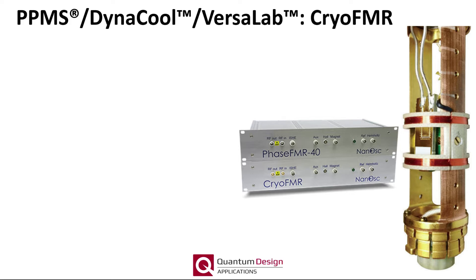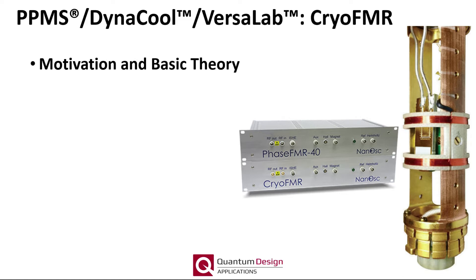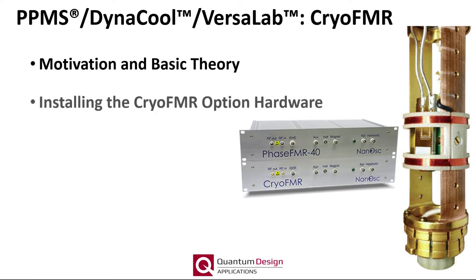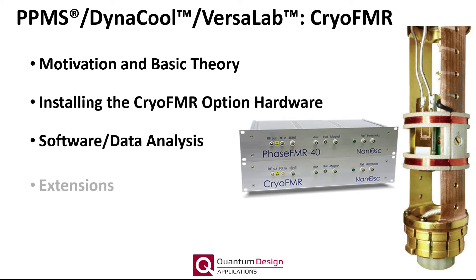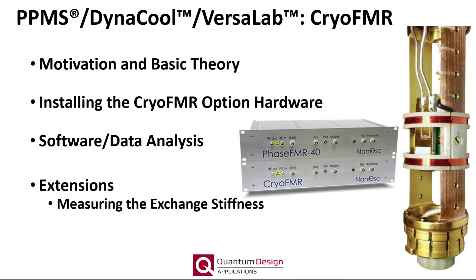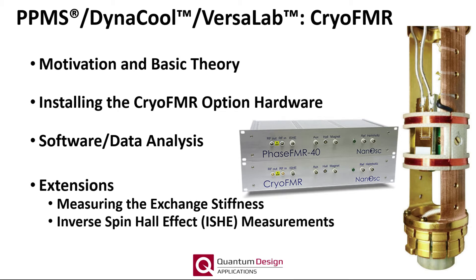The cryo-FMR option allows the experimenter the ability to probe the broadband ferromagnetic resonance, or FMR, properties of their samples, potentially spanning 2 to 40 GHz and at magnetic fields and temperatures offered by their base PPMS system. This webinar will cover the motivation and basic theory behind a broadband FMR measurement, installing the cryo-FMR option hardware, the software and subsequent data analysis, several extensions to our broadband FMR capabilities including how to measure the exchange stiffness, how to measure the inverse spin-Hall effect, and finally other measurement platforms in which broadband FMR can be performed using the electronics provided by Nanosk.